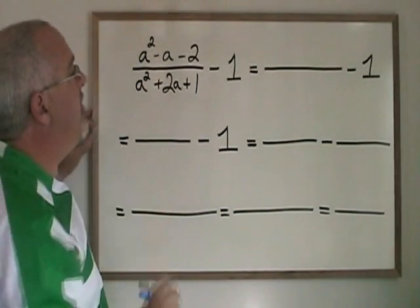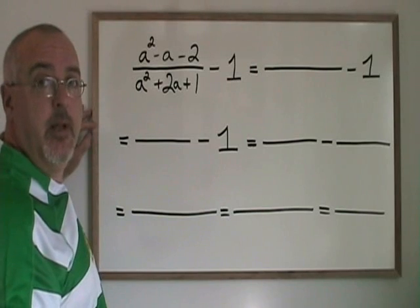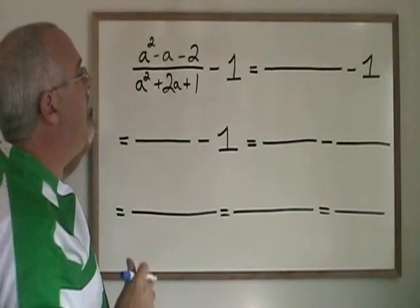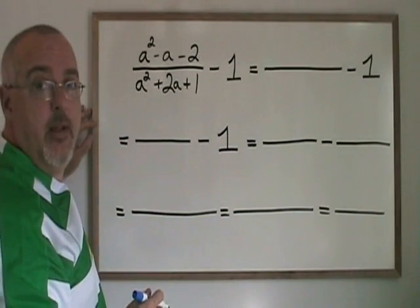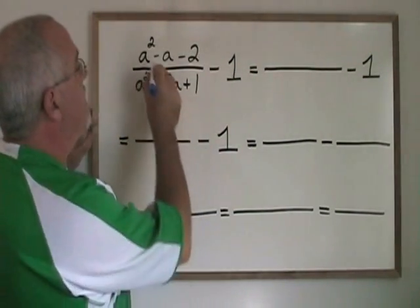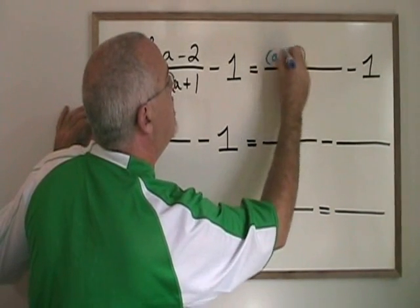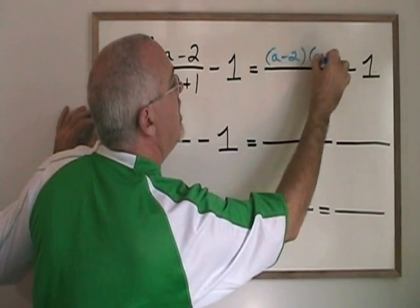The expression on the top here is a simple trinomial. We are being asked what two numbers multiply to give negative 2 and add to give negative 1. They are negative 2 and 1, so this factors to a minus 2, a plus 1.